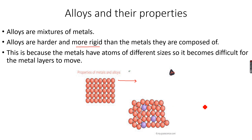Alloys have several uses. Most of them are stainless, meaning they do not corrode in air. Alloys of aluminium are used in airplanes. Copper and tin form bronze, and copper and zinc form brass — these are used in doorknobs, ornaments, and jewelry.